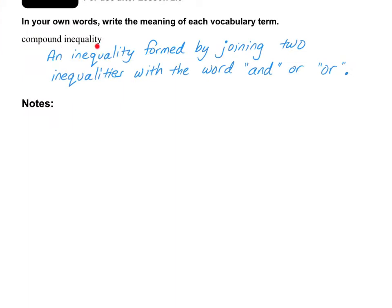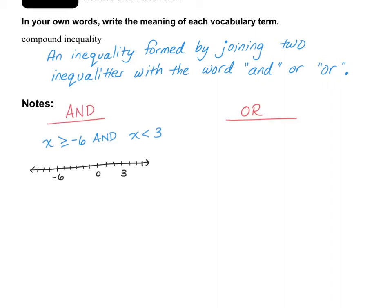A compound inequality is an inequality formed by joining two inequalities together. Those two inequalities will be joined together either with the word AND or with the word OR. So let's first talk about the word AND.